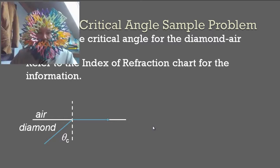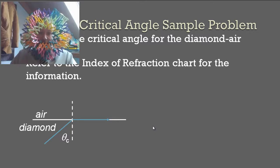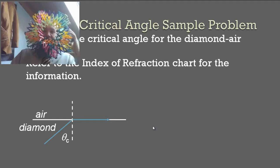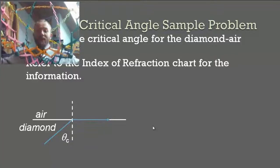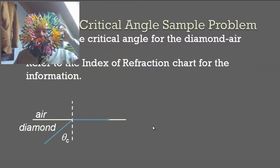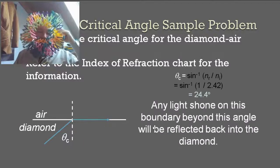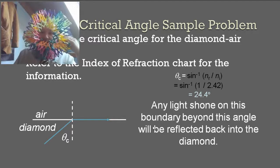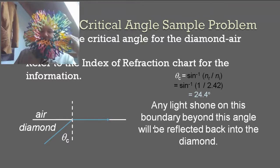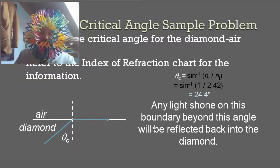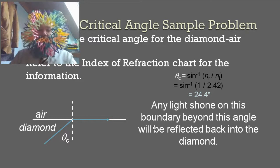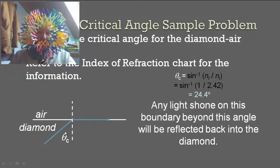Here's a critical angle sample problem. I want you to calculate the critical angle for the diamond-air boundary. So go back to the index of refraction and find that real quick. I'll pause while you pause and then I'll work it out for you. Now that you've calculated the critical angle, I will calculate it for you. We take our formula: theta c equals the inverse sine of Nr over Ni, or N2 over N1. Nr in this case is 1 because it's the air, and Ni is 2.42 because it's diamond. You plug that into your handy dandy calculator, because who likes to do inverse sines in their head? And you get 24.4 degrees. So anytime this angle in here is greater than 24.4 degrees, you're going to get total internal reflection.